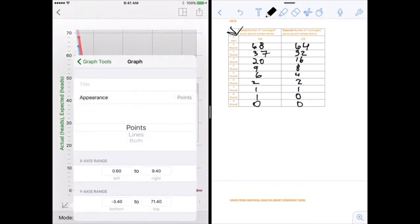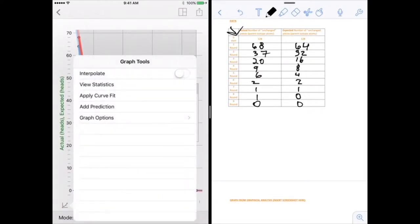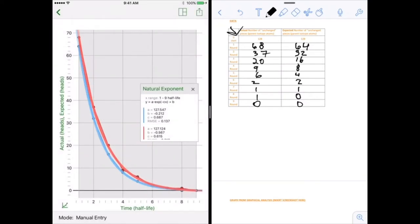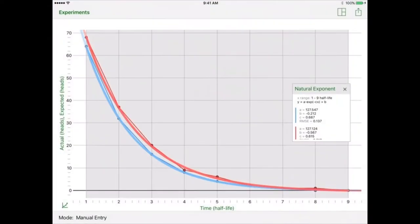If I switch to graphical options, I'm going to do points and lines. This graph looks awesome. I'm going to full screen this and take a screenshot. This is the data that's going to go into our lab write-up.